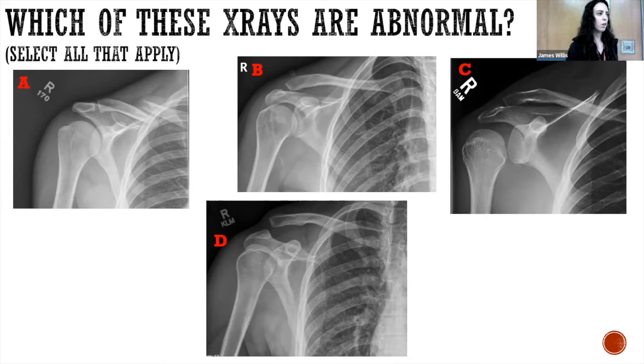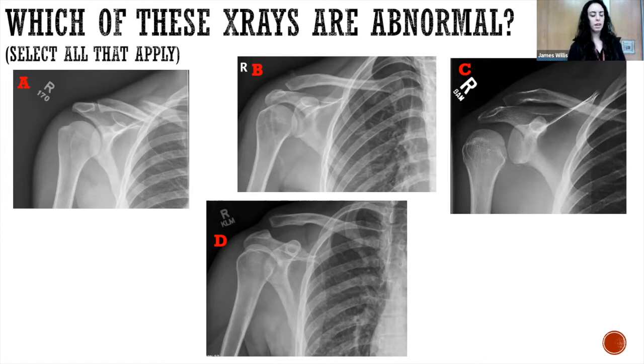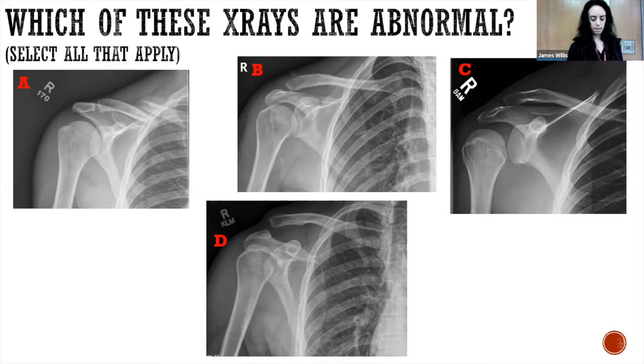This is just to highlight all the different things we have to be looking at when evaluating someone with a shoulder injury — looking for dislocations, clavicular injury, as well as the AC joint.